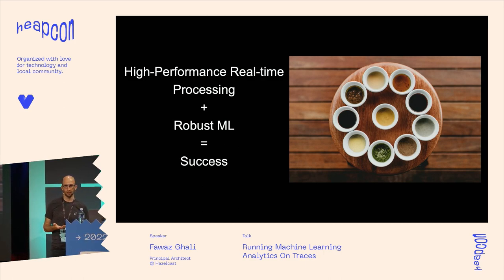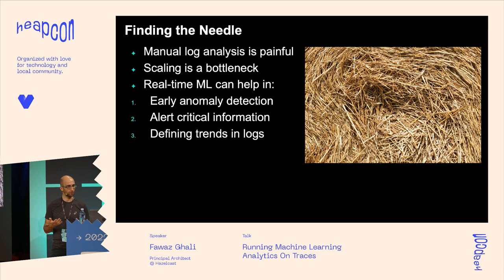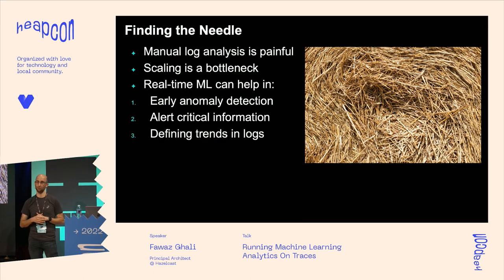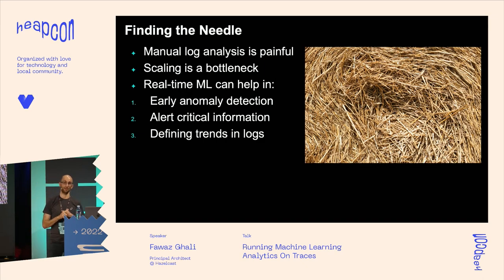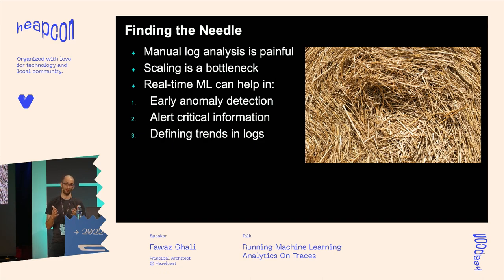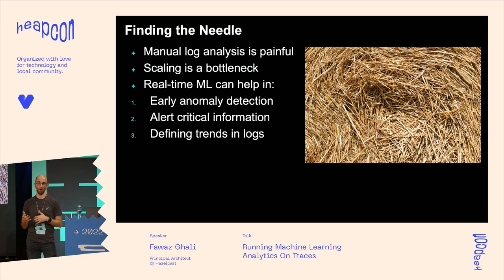So why are we talking about this for traces? For those who work with traces at scale, even for small applications, if you output all relevant information — whether info, warnings, or different log levels — it becomes like a stack of hay. Finding specific information, whether it's machine-critical errors or anything related to your mission, becomes really hard for a human to do. Even writing an application to handle it becomes out of scope when you want to scale. Scaling is a bottleneck, and manual logging doesn't work.